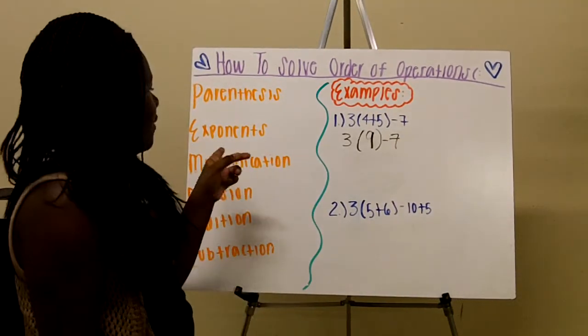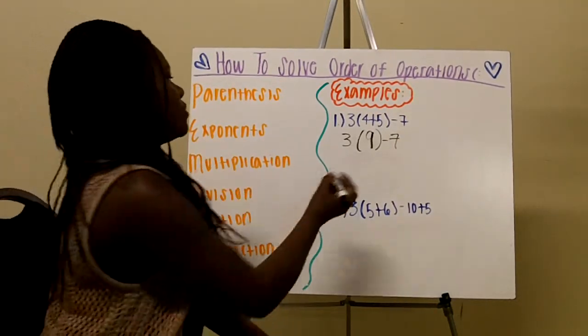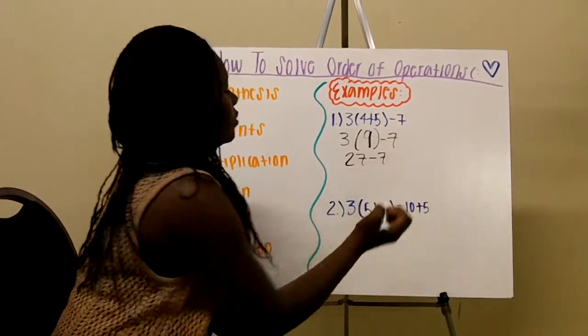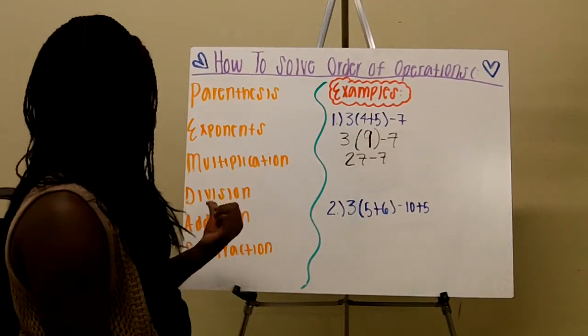So we don't have any exponents, so we do have multiplication, so 3 times 9 is 27, bring down that, and then we don't have any division.